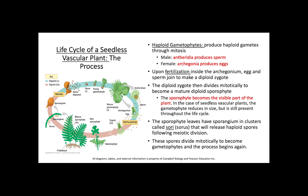The life cycle of a seedless vascular plant begins with haploid gametophytes, which produce haploid gametes through mitosis. Male gametophytes are antheridia and they produce sperm, while female gametophytes are archegonia and they produce eggs.